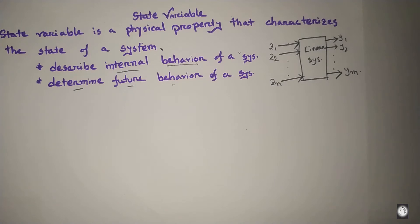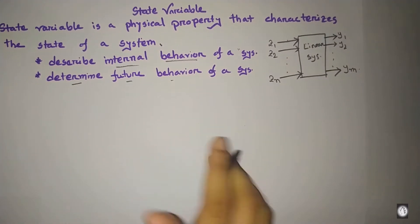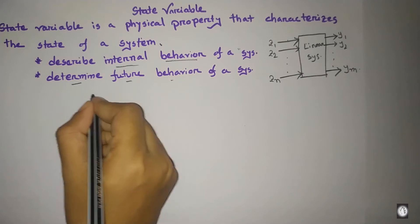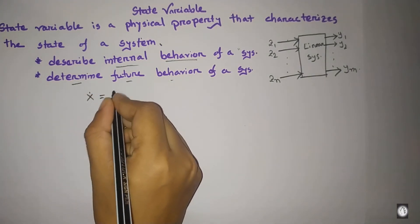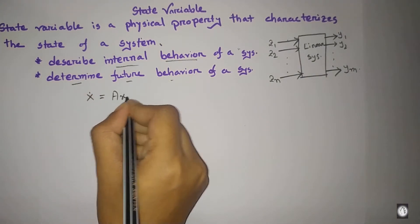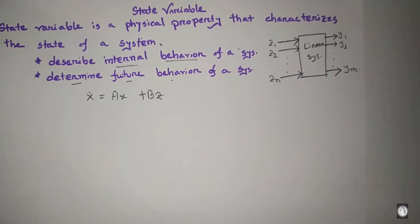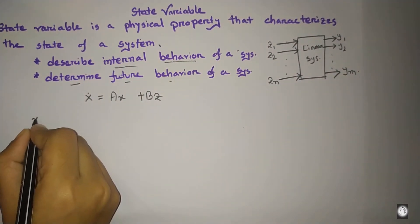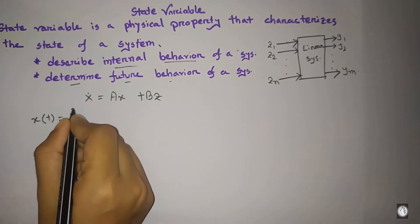So the state of a system — the state equation is written as x_dot equal to Ax plus Bz.